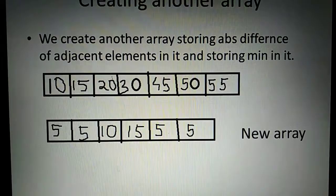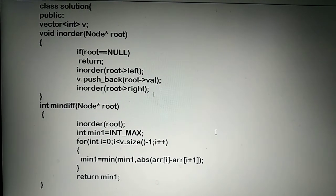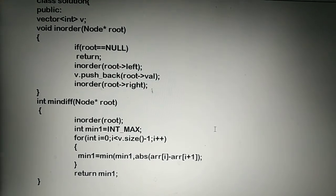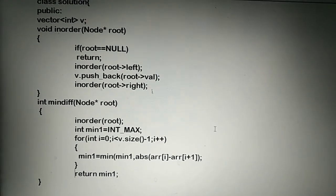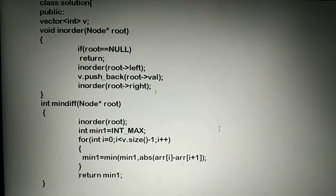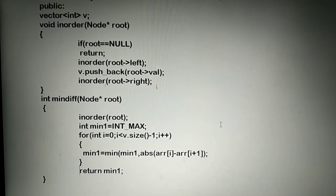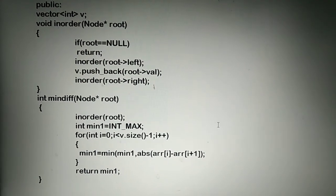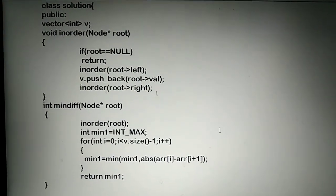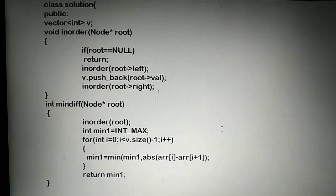As you can see from the new array, the minimum element is equal to 5. Now here is the code for the above problem. We have two functions: one is inorder and the other is min difference. The min difference function accepts a node pointer root, which is the root node or parent node of the binary search tree.